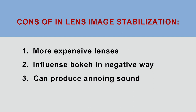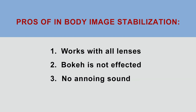Now let's look at the cons of in-lens image stabilization. First of all, those lenses are usually more expensive. This type of image stabilization can also sometimes influence bokeh in a negative way, and some lenses can produce an annoying sound, which can be especially bad for video. On the other hand, the pros of in-camera image stabilization are that it works with all lenses, so you can choose smaller, lighter and cheaper lenses without image stabilization. Also, bokeh is not affected and there is no annoying sound.